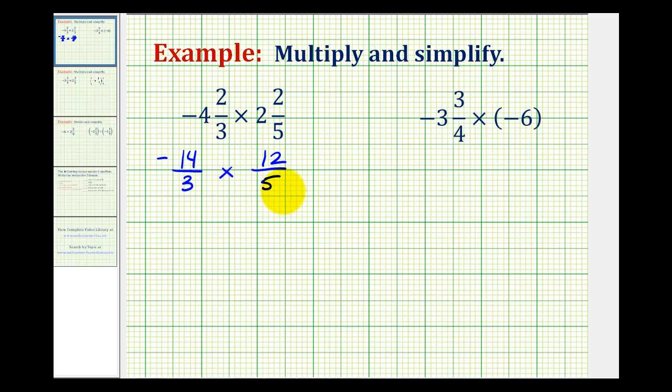Now before we multiply, we do want to simplify out the common factors between the numerators and denominators. And since three and twelve share a common factor of three, we can simplify here. To show this, let's write negative fourteen-thirds times, and for twelve, we'll write three times four. This isn't necessary, but this does show the common factor of three over three that simplifies to one.